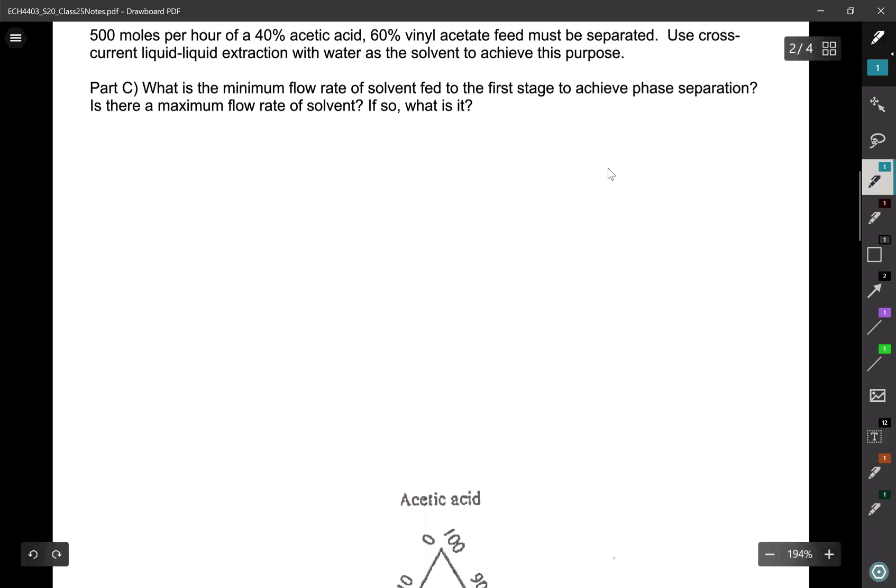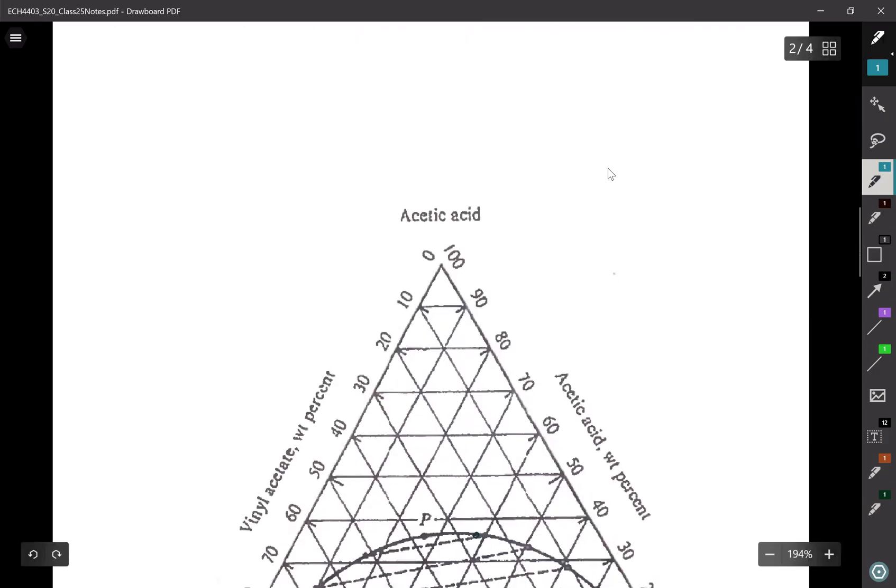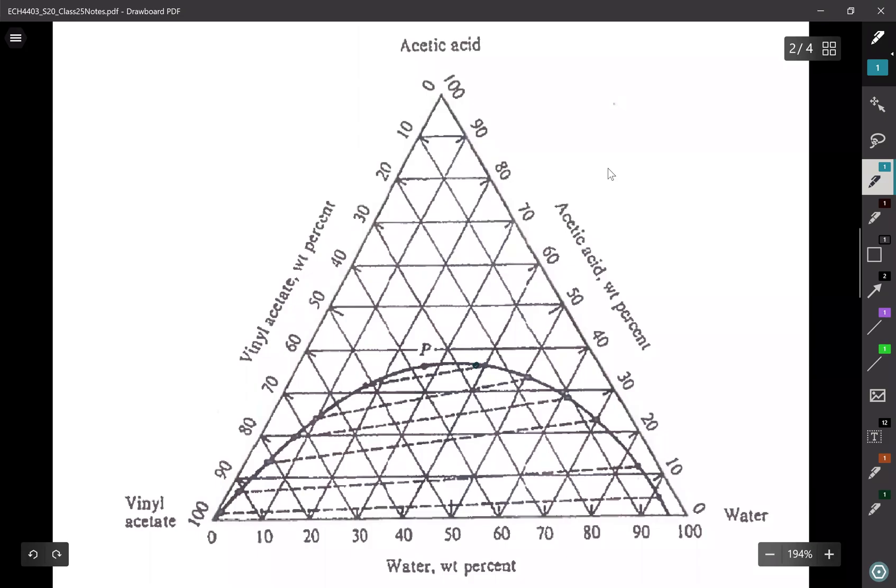But here in liquid-liquid extraction, it is going to be related to where the mixing point is such that I get a mixing point that will phase separate. So let's go through on the diagram to plot the points. My feed point is there. The flow rate is 500 moles per hour. My solvent is pure water, and I have to figure out what the minimum amount of solvent that I need to feed is.